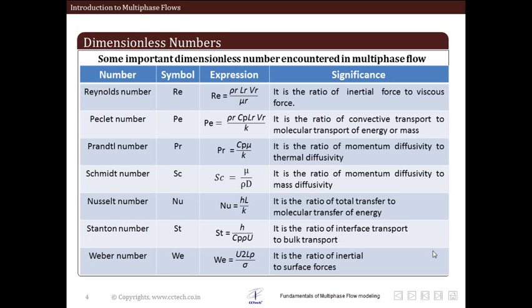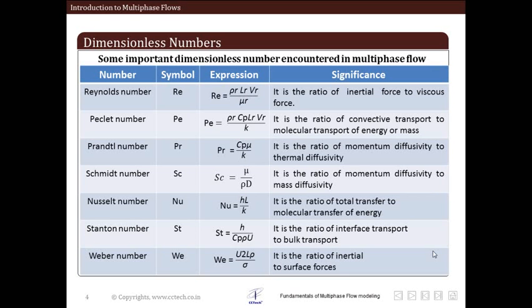It is extremely important to remember some non-dimensional or dimensionless numbers associated with multiphase flow. First is the Reynolds number, given by the symbol Re. It is expressed as the ratio of inertial force to viscous force, and mathematically given by the ratio of density, the length scale, and the velocity scale divided by the viscosity.